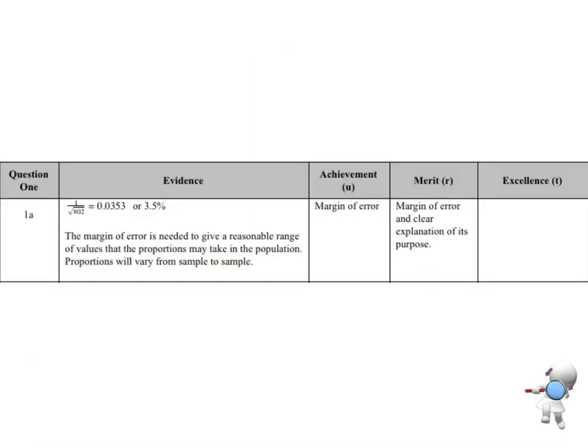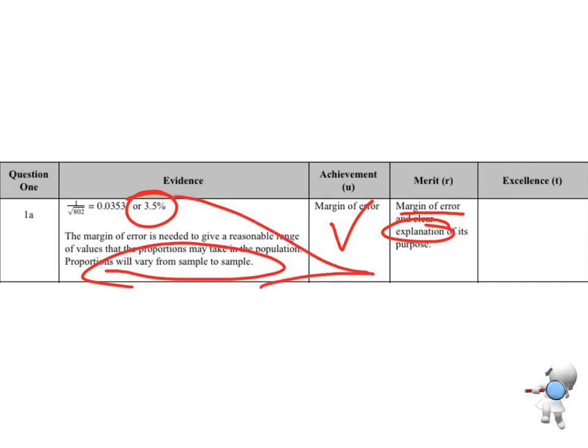If you're able to calculate the margin of error correctly, so if you're able to get to that 3.5 percent, then that gets you your achievement. If you're able to do the margin of error and give an explanation, talking about the fact that proportions are going to vary from sample to sample, somehow in there you've talked about that idea of sampling variability, if you've got both of those two things then that gets you the merit R.